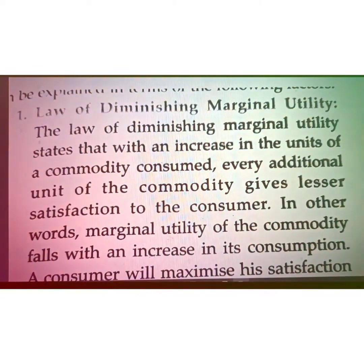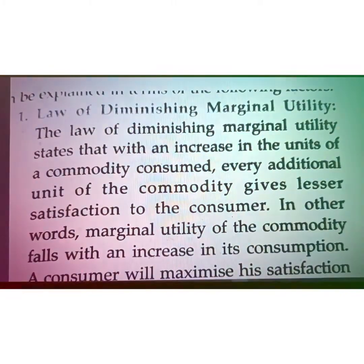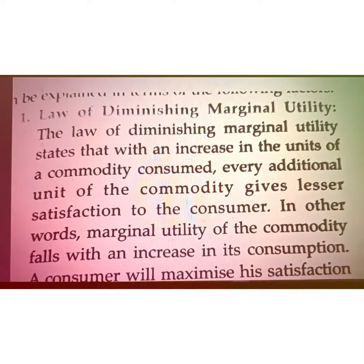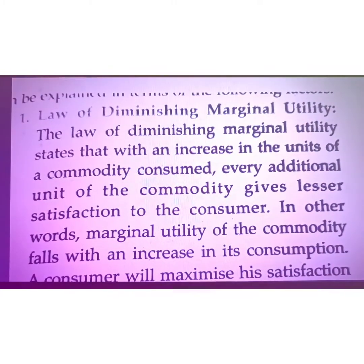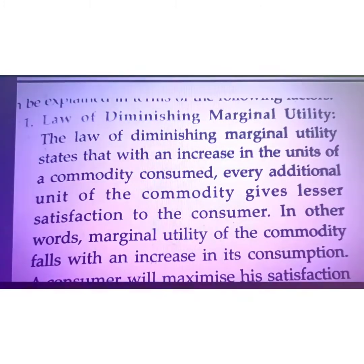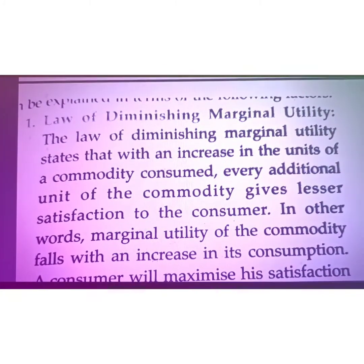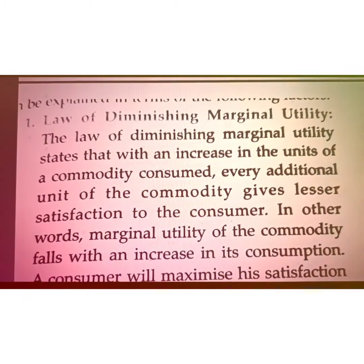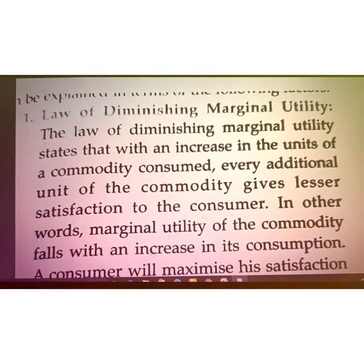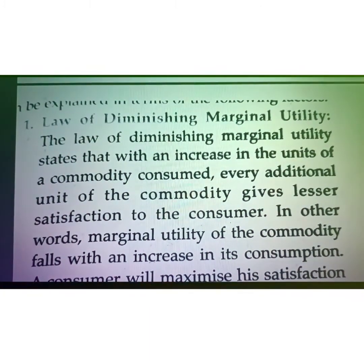So the law of diminishing marginal utility states that as we consume additional units of a commodity, the satisfaction level of the consumer comes down, and the consumer is not willing to pay the same price for the next additional commodity. For example, you are feeling very hungry and you can pay 20 rupees for one samosa, even though it is available for 10 rupees. But after consuming two samosas, your satisfaction level is low and you are not willing to pay 20 rupees.